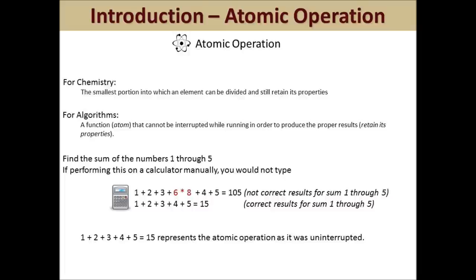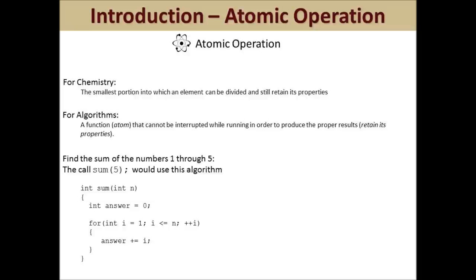A good example is if you were calculating the sum of 1 through 5 — you wouldn't want to type 1 plus 2 plus 3 plus, then start a different equation like 6 times 8, and then go back to finish, because the operation was interrupted. What you wanted was 1 plus 2 plus 3 plus 4 plus 5 without interruption. Therefore, once an atomic operation starts, it must finish without interruption to produce the proper results. Here's the code for calculating the sum of 1 through 5 in a method named sum — the number 5 is passed into the method, the calculation runs without interruption, so the method sum is an atomic operation.